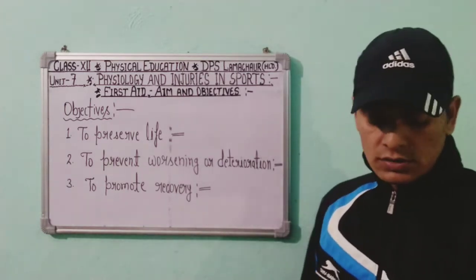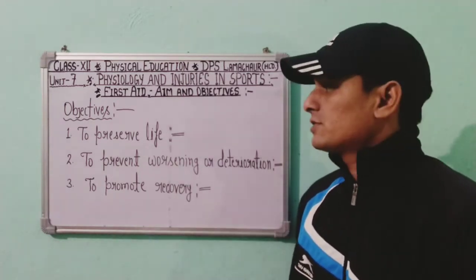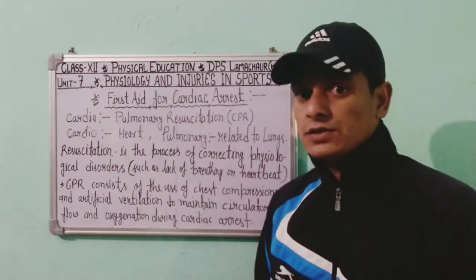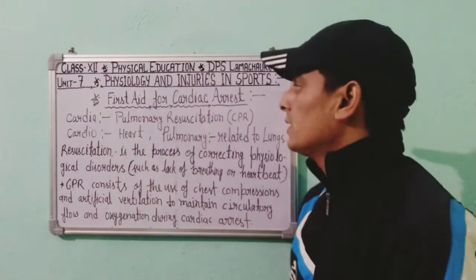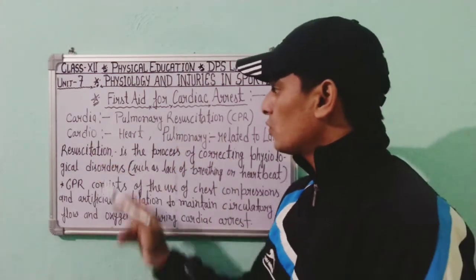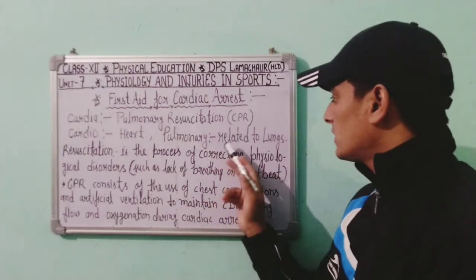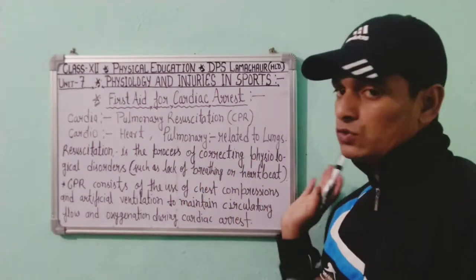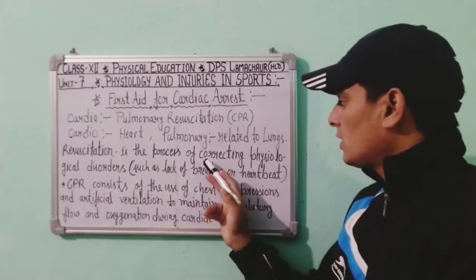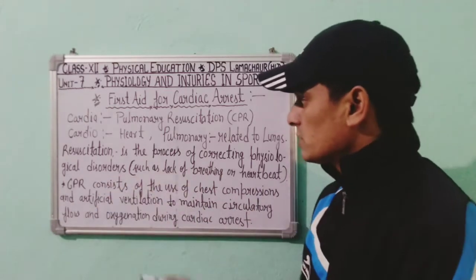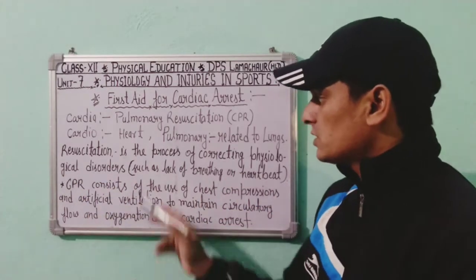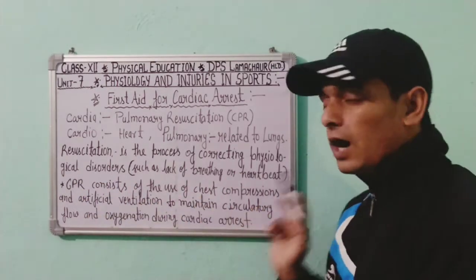Now I will tell you about first aid for different health risks. First is first aid for cardiac arrest. CPR stands for Cardiopulmonary Resuscitation. Cardio means heart, pulmonary is related to lungs. Resuscitation is the process of correcting physiological disorders such as lack of breathing or heartbeat.